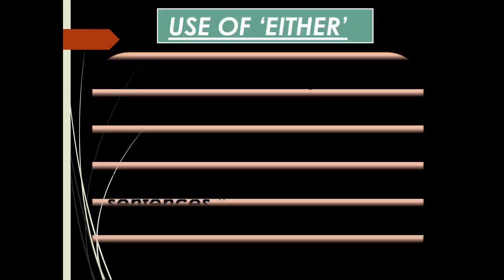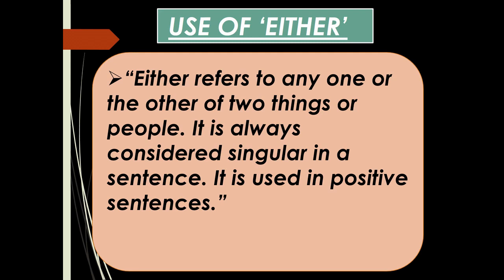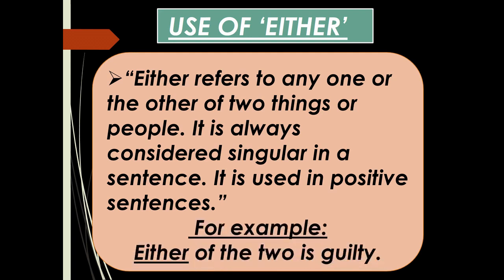Use of 'either': 'Either' refers to anyone or the other of two things or people. It is always considered singular in a sentence and is used in positive sentences. For example: 'Either of the two is guilty.' Here, 'either' refers to a pair of persons, places, or things. It usually indicates that one of the two is or is not involved.